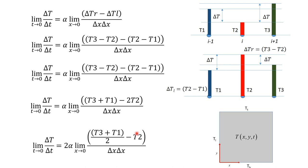The difference in temperature with respect to time depends on this particular function, which is the average temperature of the adjacent points. If this is our point of interest, then these two are the adjacent points and we take their average — for example, (T3 + T1) / 2, where this is T3 and T1. This gives the average temperature of the adjacent points, and our temperature of interest is T2. If this difference exists, be it negative or positive, there will be a heat flow.